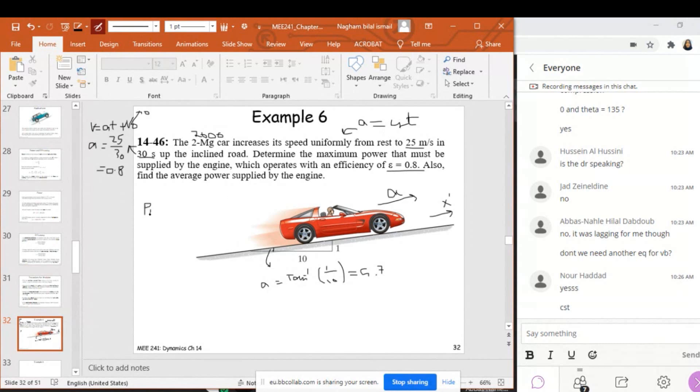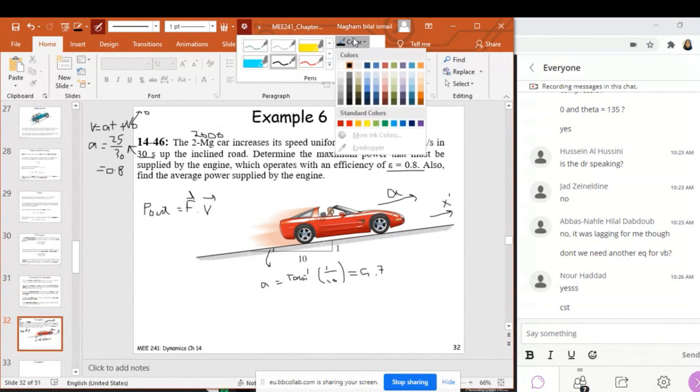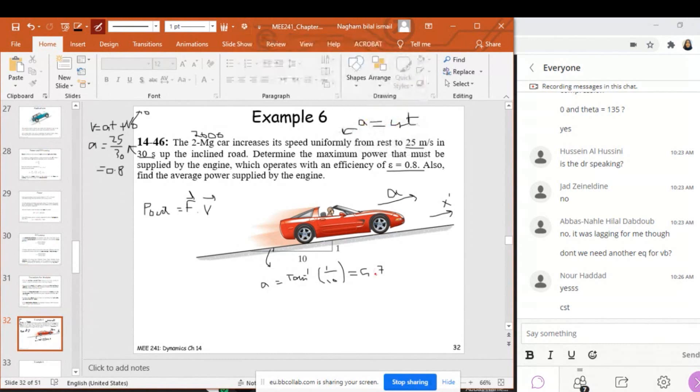I know the efficiency. First of all, I can find P_out because I know that P_out equals the force of the engine that is allowing this car to move in x-prime, dotted with v.